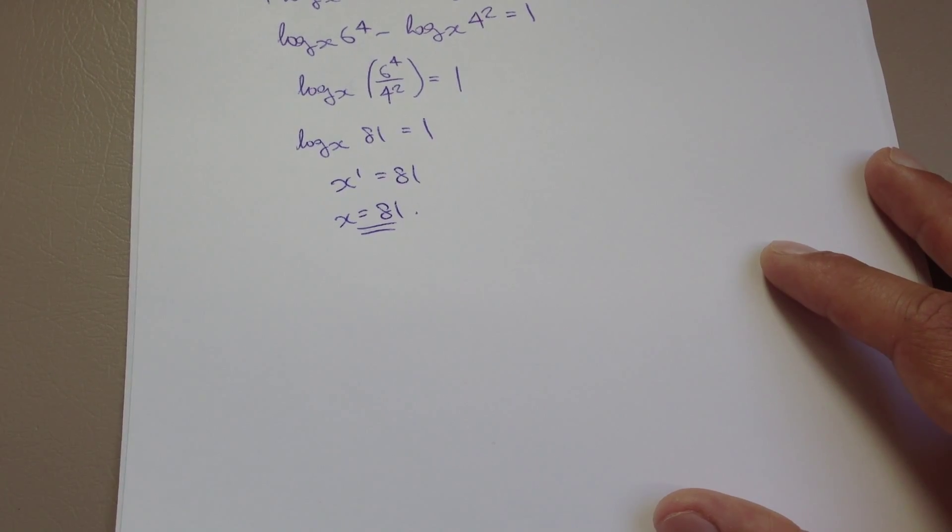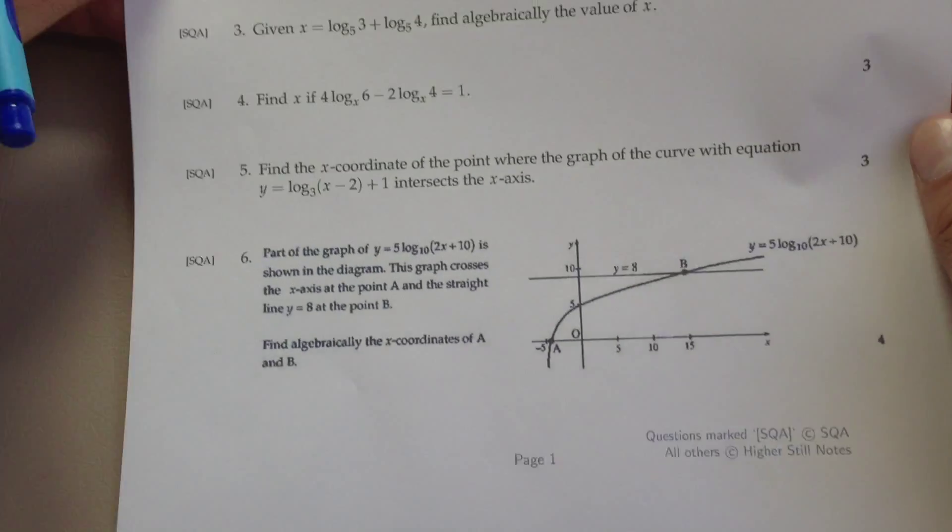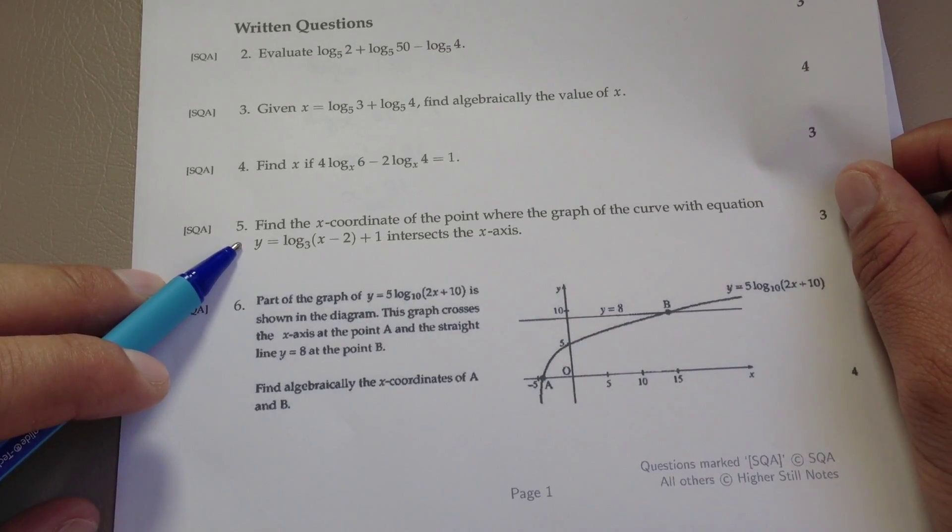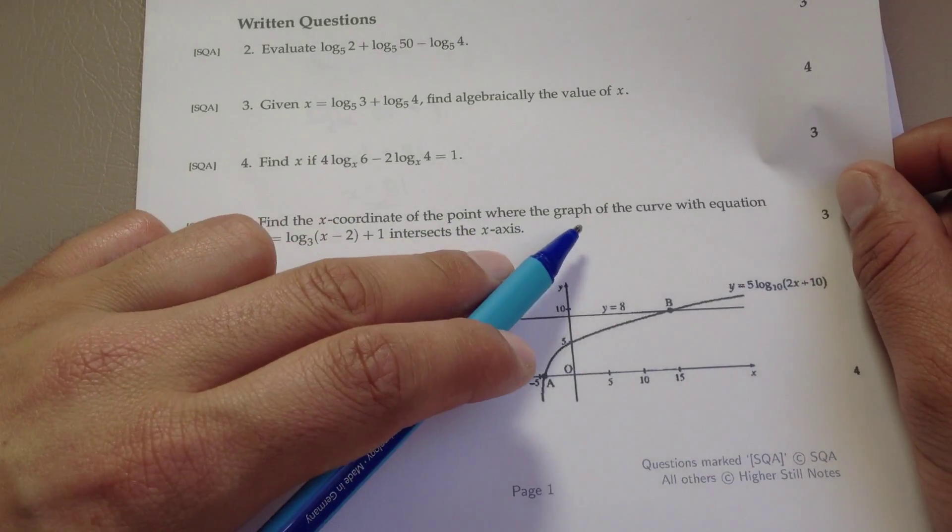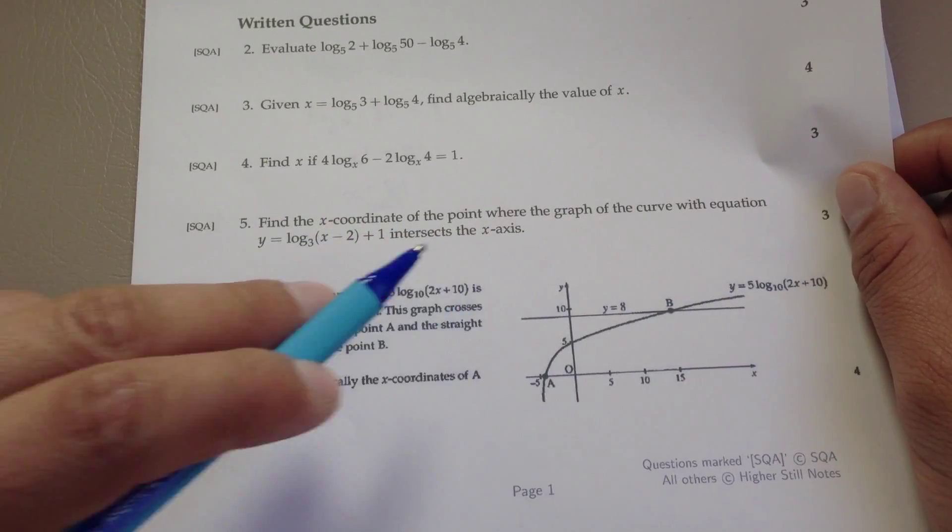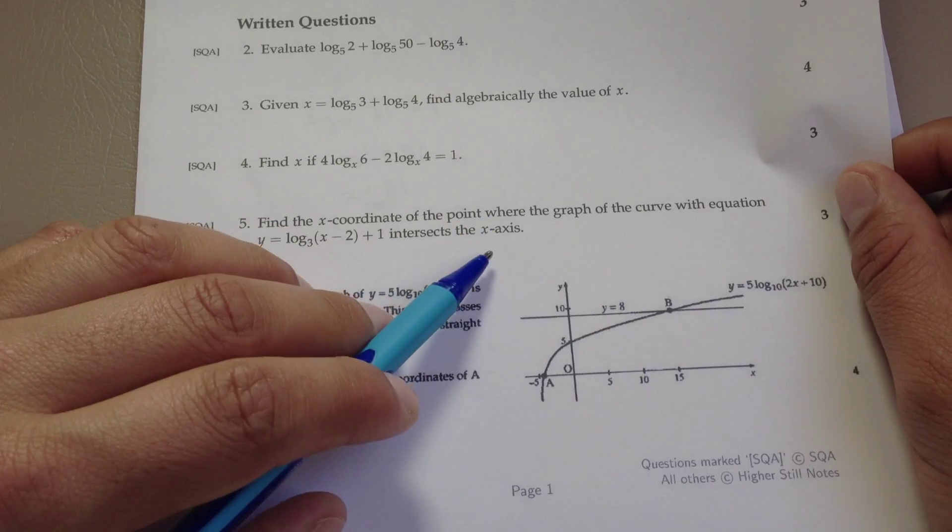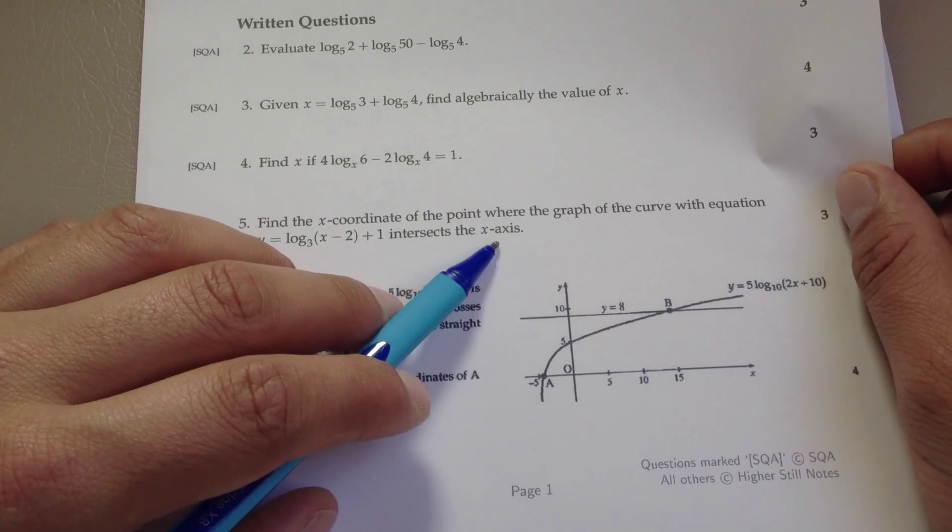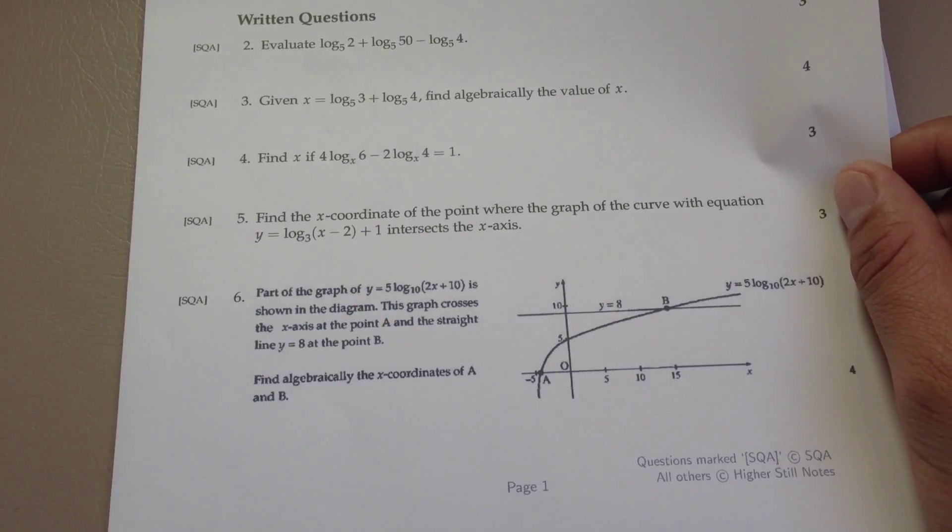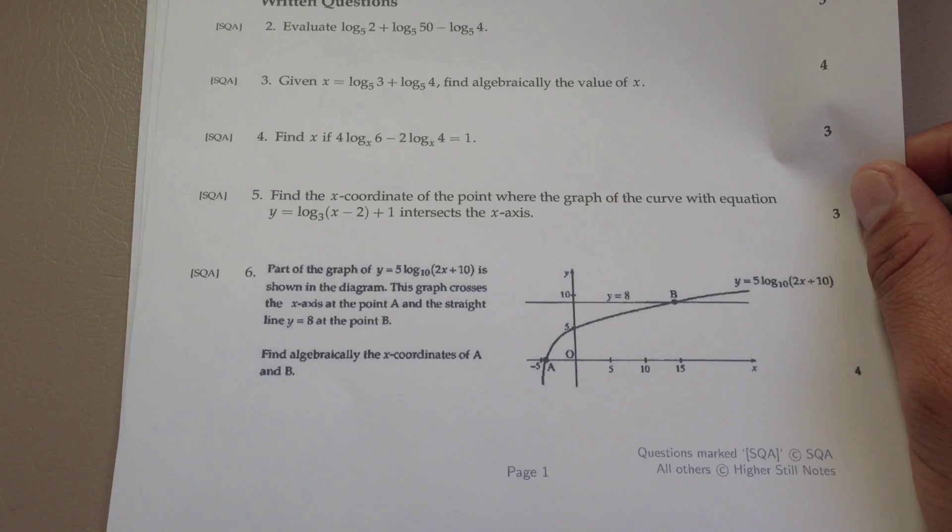Let's do another one. Here we're being asked to find the x-coordinate where the graph with this equation intersects the x-axis. If a graph is intersecting the x-axis, the y-coordinate has to be 0 because that's a prerequisite for it to cross the x-axis.